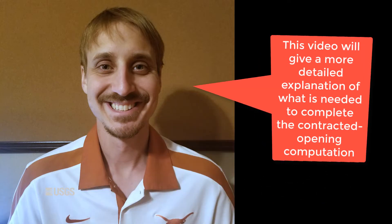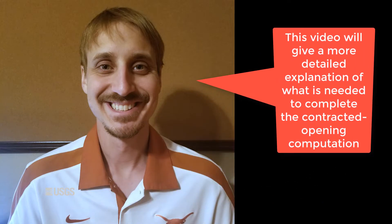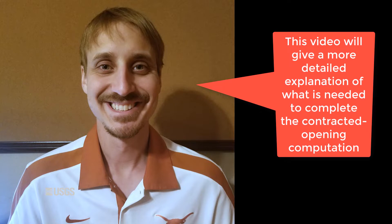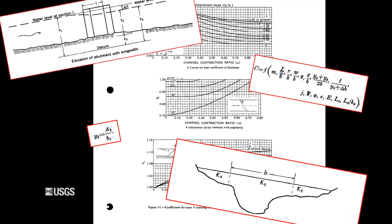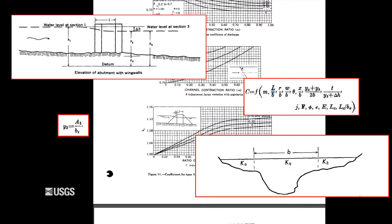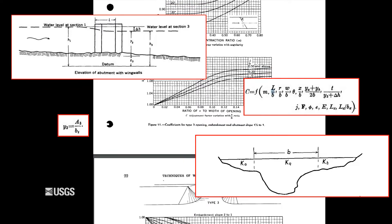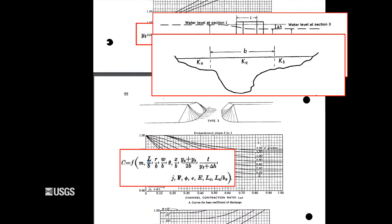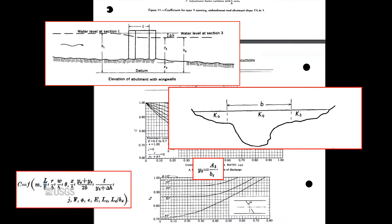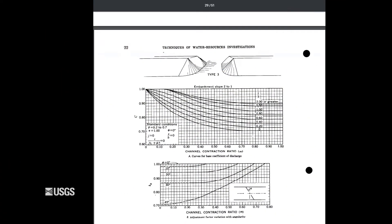In this video, I will give a more detailed explanation of what information is needed to complete the contracted opening computation. For a more in-depth explanation of width contraction or contracted opening indirect discharge measurements, please refer to TWRI Book 3, Chapter A-4. For a contracted opening indirect, there are many individual measurements that contribute to the final computed discharge. Some of the data are used to define channel geometry, while others are used to derive an adjustment factor, or discharge coefficient, from empirical charts created in a laboratory setting.